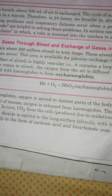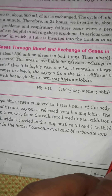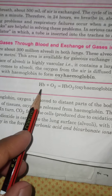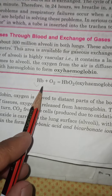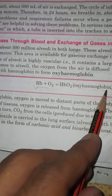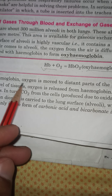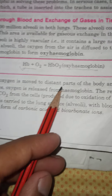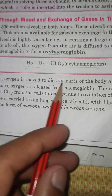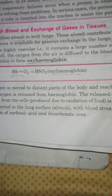The oxygen combined with hemoglobin forms oxyhemoglobin — that is HbO2. This oxyhemoglobin is then transported through the bloodstream and reaches up to the tissues.